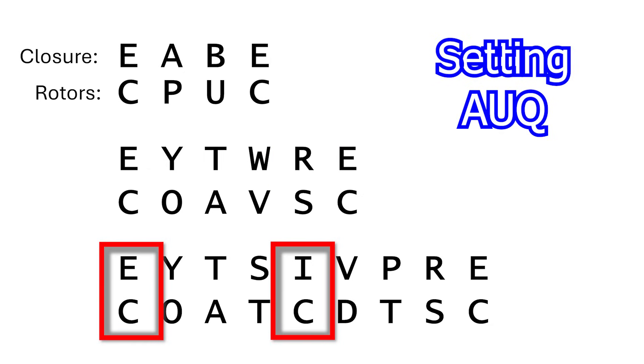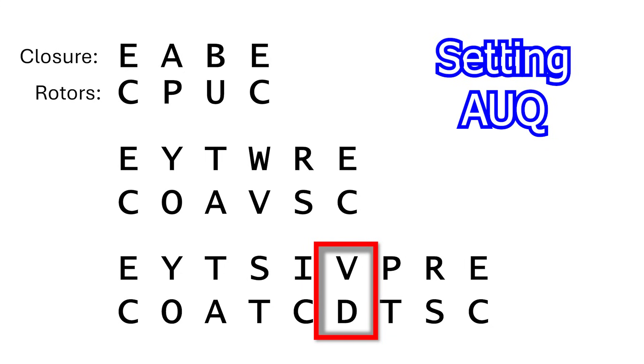C maps to I, but we've already mapped C to E. T and V here is inconsistent with the V and W here. Finally, T mapping to P is just wrong.